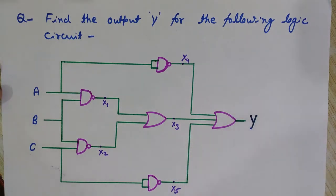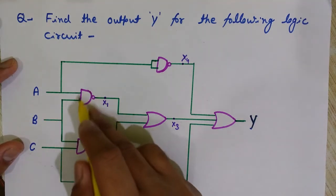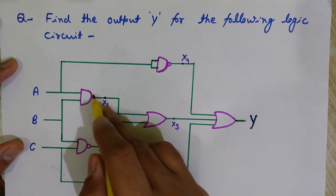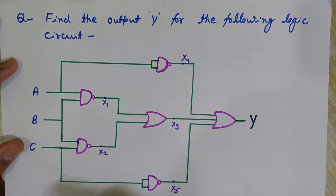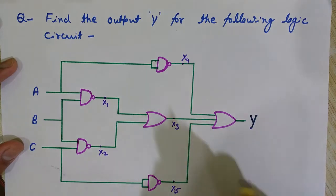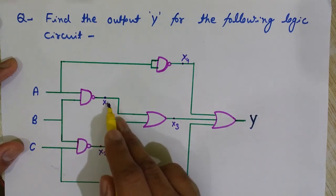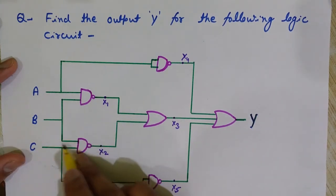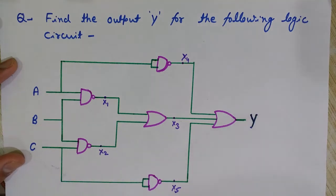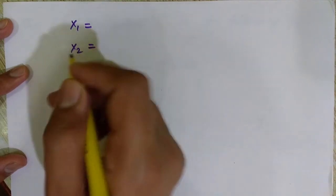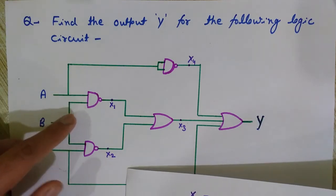So what is x1? Here you see two inputs — this is a NAND gate. NAND means NOT-AND: first AND, then NOT. This is an OR gate, and here again two NAND gates with this OR gate. The output x1 is equal to A NAND B, and x2 is B NAND C.